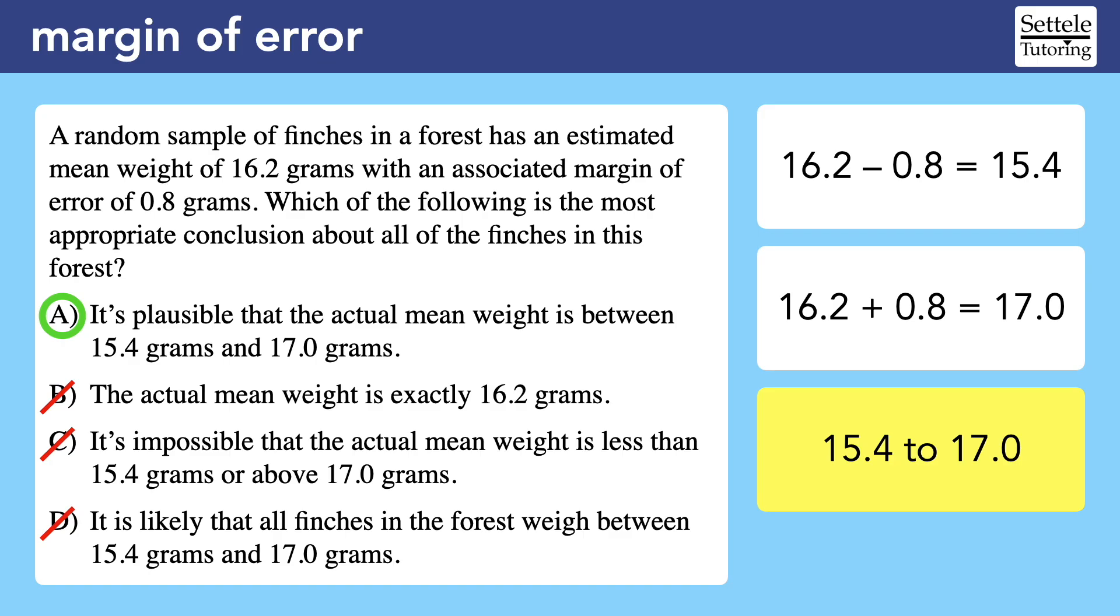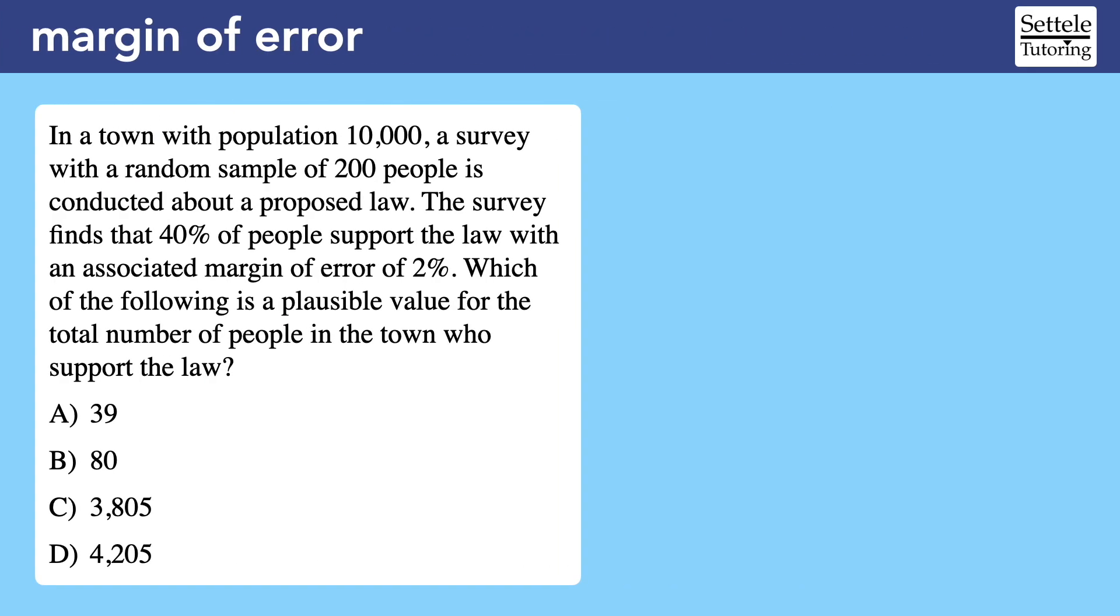Let's look at a slightly more twisted example. In a town with population 10,000, a survey with a random sample of 200 people is conducted about a proposed law. The survey finds that 40% of people support the law with an associated margin of error of 2%. Which of the following is a plausible value for the total number of people in the town who support the law? We can start the same way as always. If we add and subtract the 2% margin of error from the survey value of 40%, we get an interval of 38% to 42%.